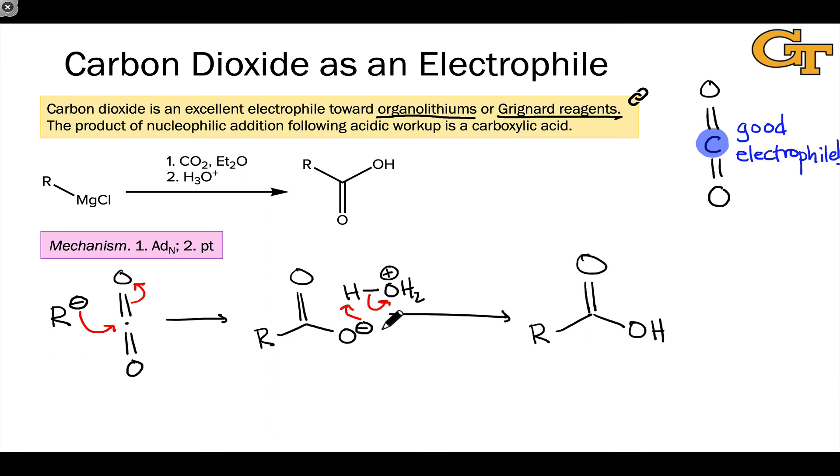This reaction can be a really nice way to turn an alkyl halide through two steps into a carboxylic acid. Imagine we started, for example, with R-Cl and treated that with magnesium metal. That would lead to the Grignard reagent shown here. We could then convert that Grignard reagent into the corresponding carboxylic acid just by treating with CO2 and acidic workup.